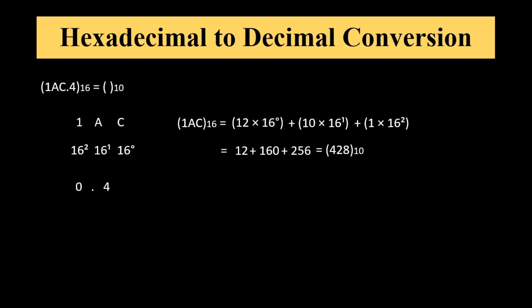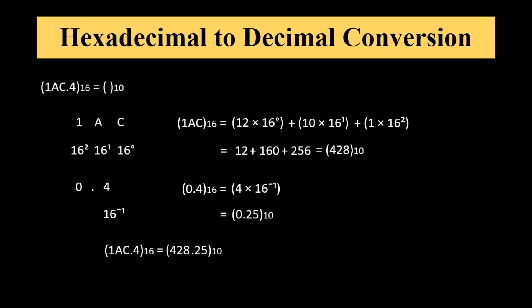Now the fractional part 0.4 will be converted by the same process. The digit 4 has a weight of 16 to the power minus 1, and towards the right the weight will be 16 to the power minus 2 and so on. As there is only one digit, hexadecimal number 0.4 equals 4 times 16 to the power minus 1, equal to decimal number 0.25. So hexadecimal number 1AC.4 equals 428.25 in the decimal number system.